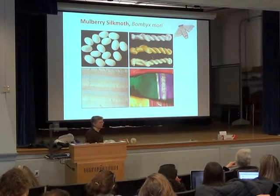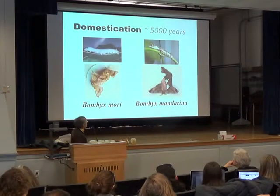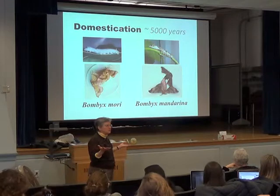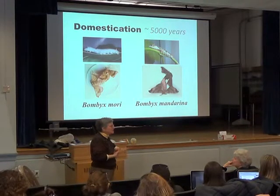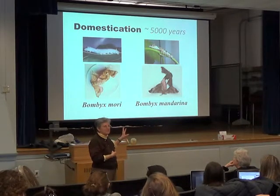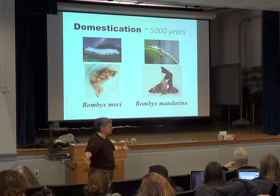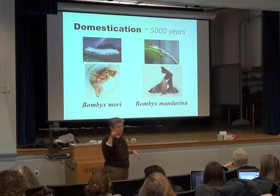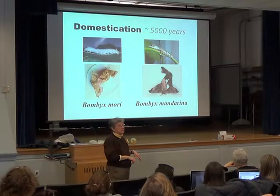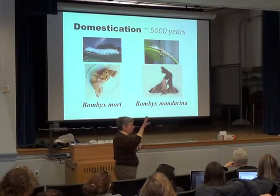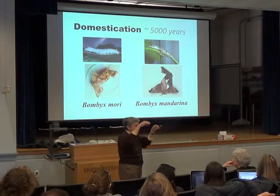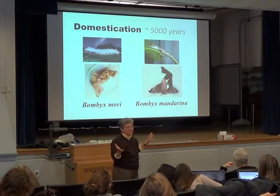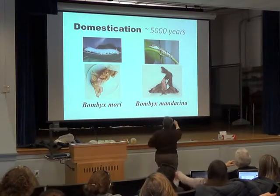I want to talk about domestication, because that's a major event and really what makes the silk industry possible. Domestication means that this insect cannot live on its own in the wild. If they escape — which they often do — they are not going to find a mulberry tree the way a moth would, or like those invasive loopers we have now, the winter moth in spring. Those larvae will spin a little moon thread and float away, but these silkworms won't. They've been selected to be pretty passive.